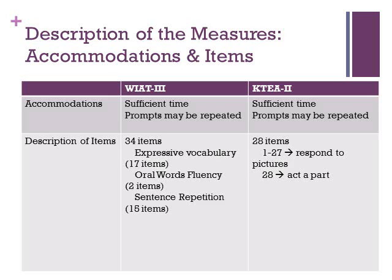On the 28-item KT-2 subtest, students are required to orally convey thoughts. Items emphasize greetings, questions, descriptions of events, persuasion, forming plurals and possessives, and constructing sentences from specific ideas or words. For the first 27 items, students provide responses based on a picture the examiner shows them. For the last item, the examiner presents a situation orally and students must act out a part in the situation.